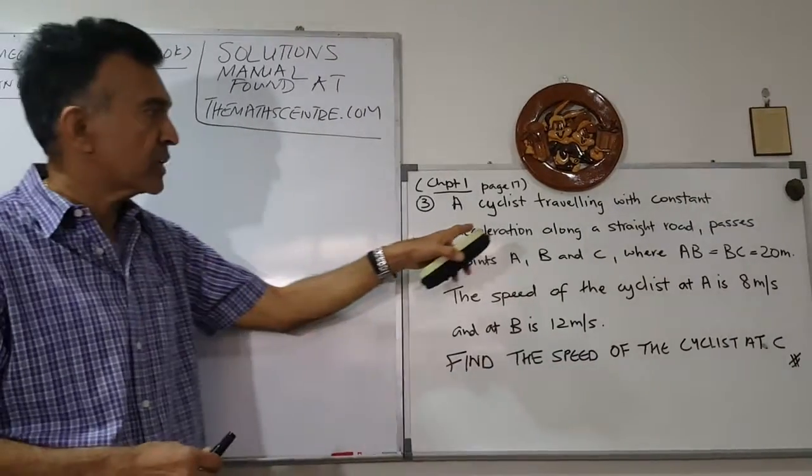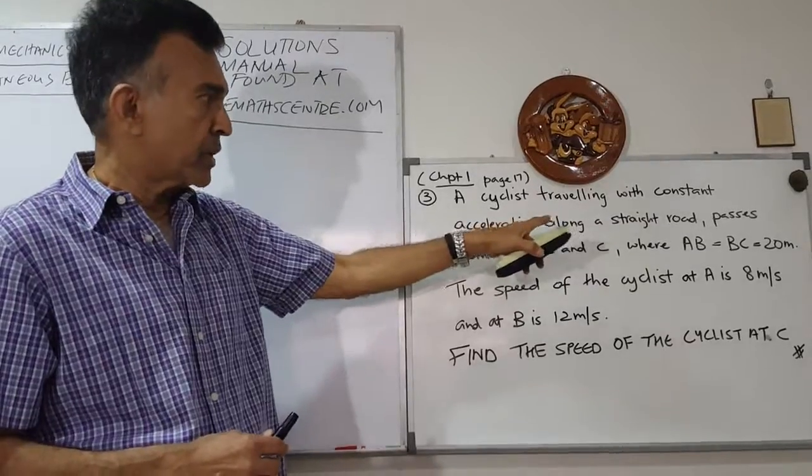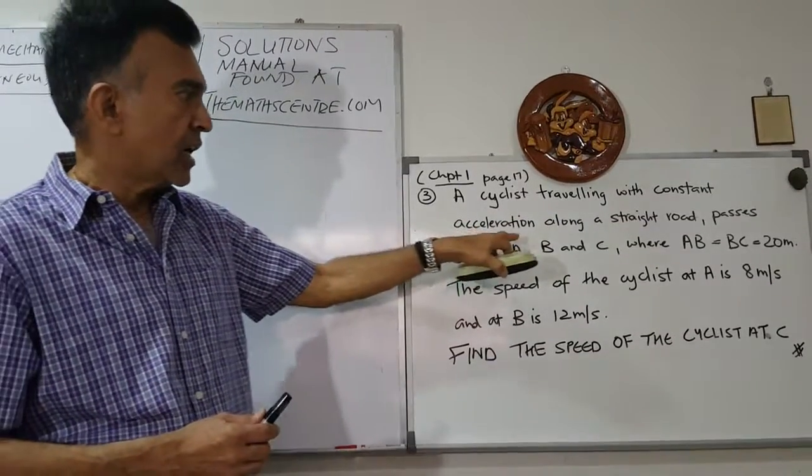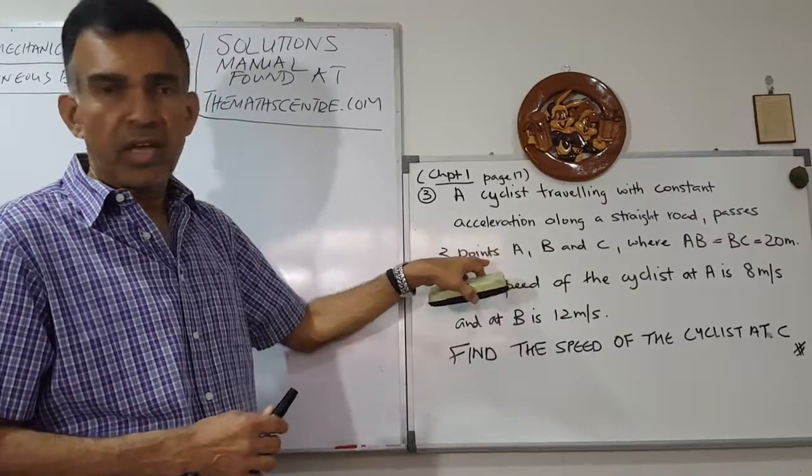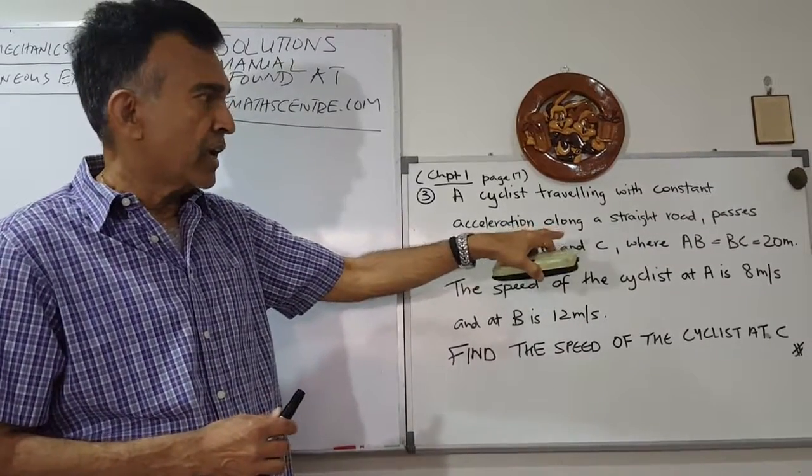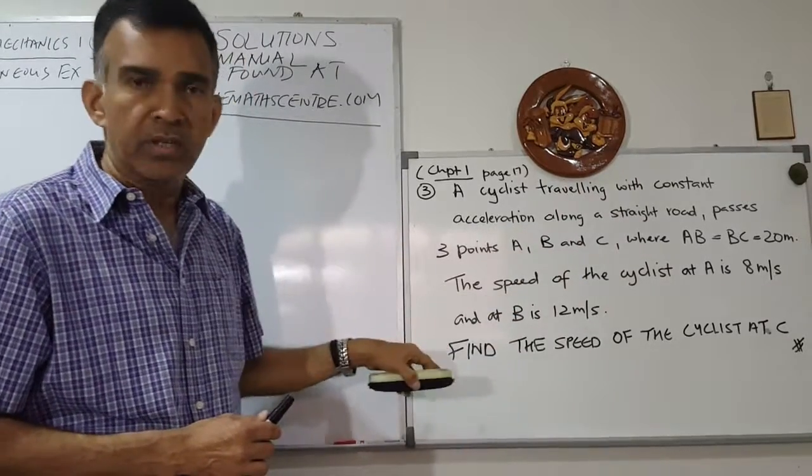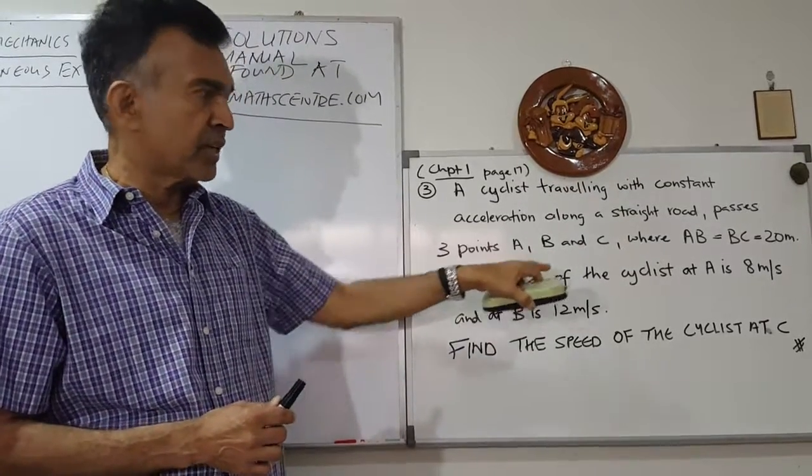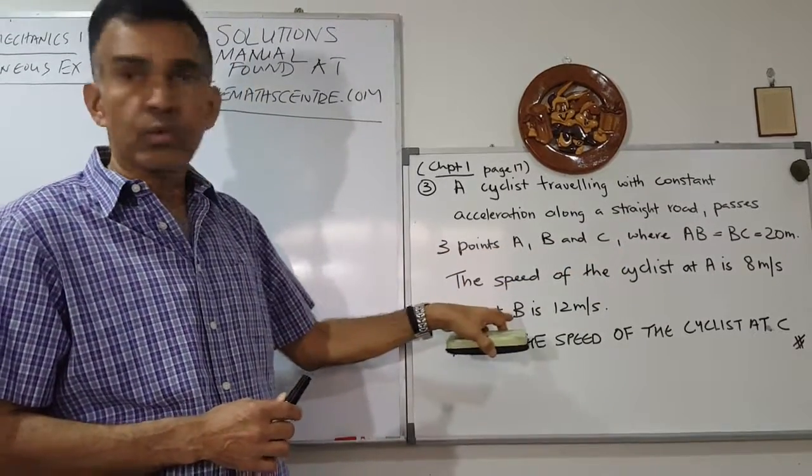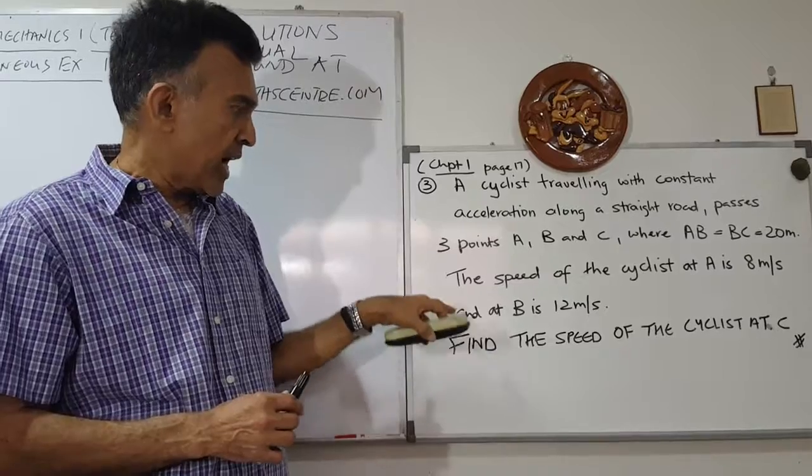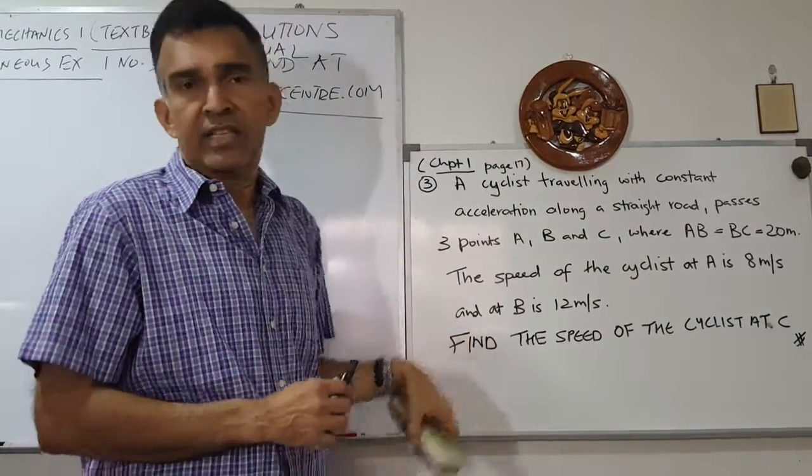The question goes like this: A cyclist traveling with constant acceleration along a straight road passes three points A, B, and C. The distances AB is 20 meters and BC is 20 meters. The speed of the cyclist at A is 8 meters per second and at B is 12 meters per second. You're asked to find the speed of the cyclist at C.